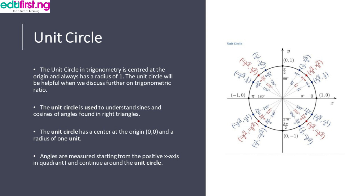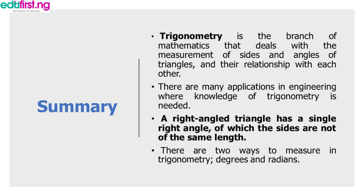In summary, we discussed the definition of trigonometry as a branch of mathematics dealing with the measurement of sides and angles and their relationship with each other, and its applications in engineering and sciences. We know a right angle triangle has a single right angle with sides of unequal length. There are two ways to measure angles: in degrees and in radians.